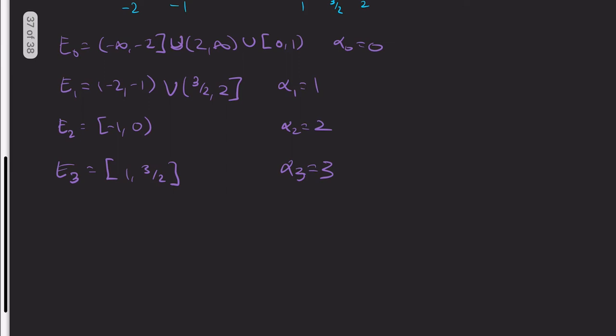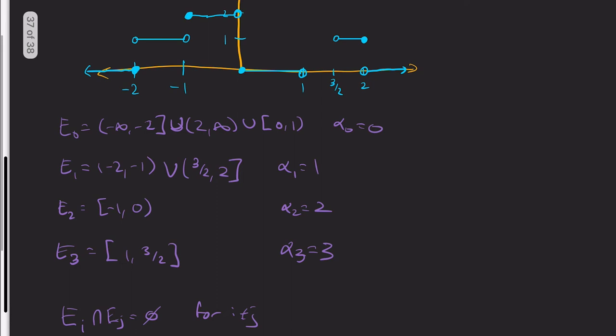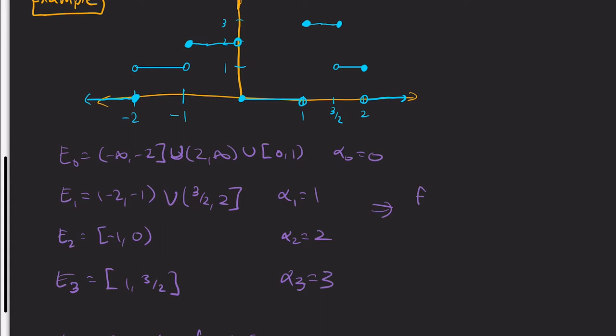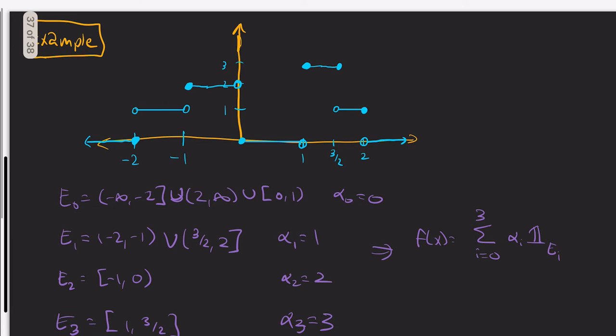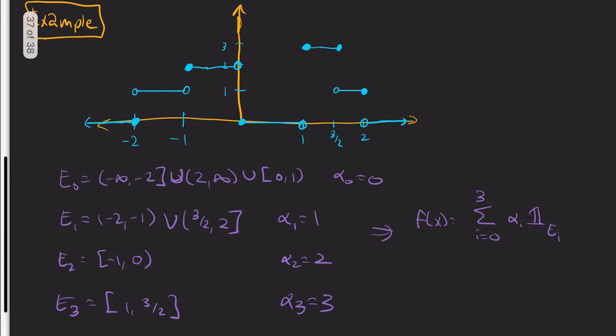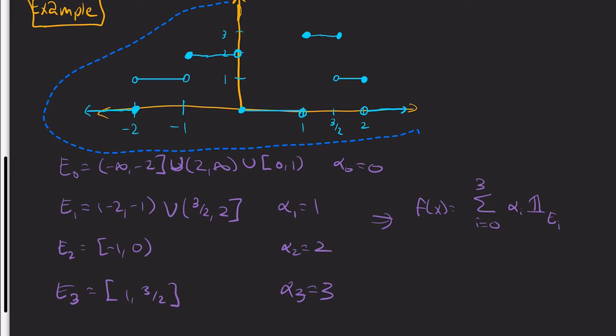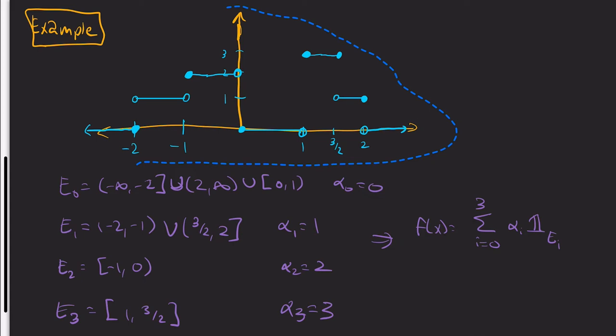Notice, you can check me on this - E_i intersect E_j is empty for i not equal to j. In case I made any mistakes, if that's not true, then this needs to be modified. And we have that f(x) equals the sum from i=0 to 3 of α_i times the indicator function of E_i. So that's what a typical simple function looks like.